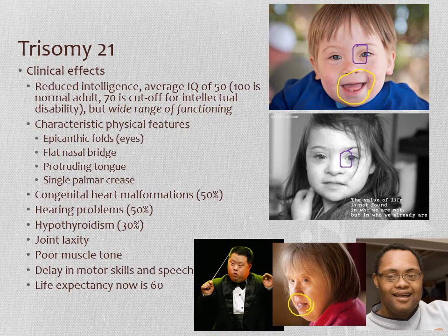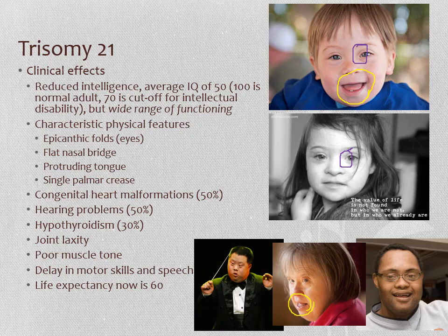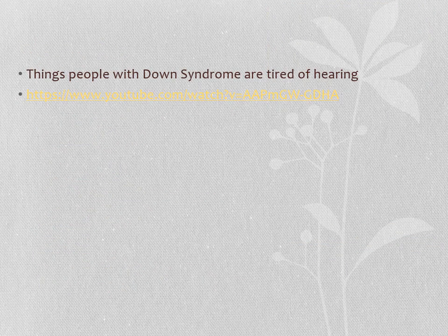Life expectancy for people with Down syndrome used to be quite low because we couldn't treat the congenital heart problems effectively. Nowadays, however, we've become very good at managing these complications, and life expectancy is now around age 60. This is wonderful, but it also presents a new challenge: many people with Down syndrome are not able to live independently and rely on their parents, who may pass away before them — a challenge that didn't exist when life expectancy was much shorter.